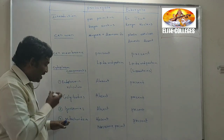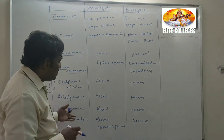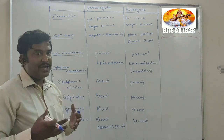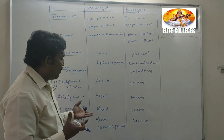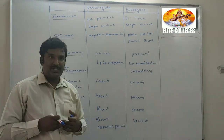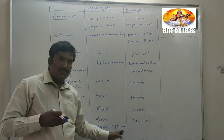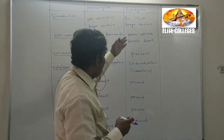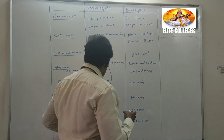You have studied in lower classes that mitochondria is called the powerhouse of the cell. It is mainly involved in aerobic respiration. But mitochondria is absent in prokaryotes. Then how do prokaryotes undergo respiration? Prokaryotes undergo respiration with the help of a specialized structure called the mesosome. Mesosomes play an important role in aerobic respiration of prokaryotes. In eukaryotes, mitochondria is present and respiration takes place inside the mitochondria.